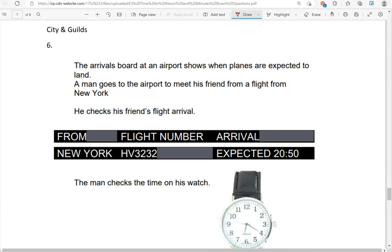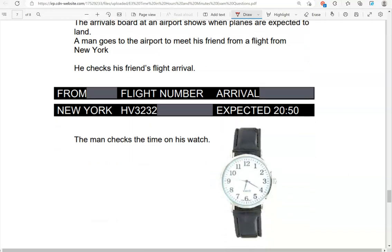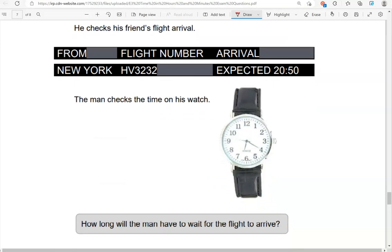The arrivals board at an airport shows when planes are expected to land. A man goes to the airport to meet his friend from a flight from New York. He checks his friend's flight arrival. The man checks the time on his watch. How long will the man have to wait for the flight to arrive? So the time shown on the watch is 6, and counting: 5, 10, 15, 20. So it's 6:20.